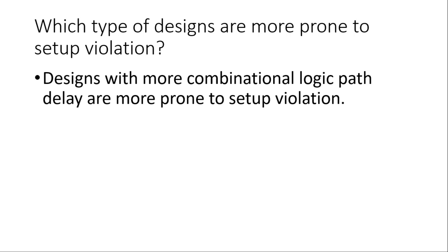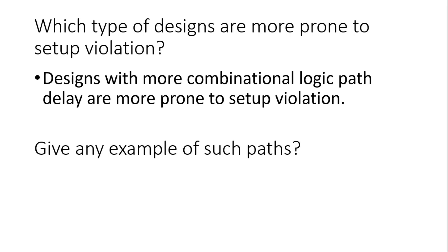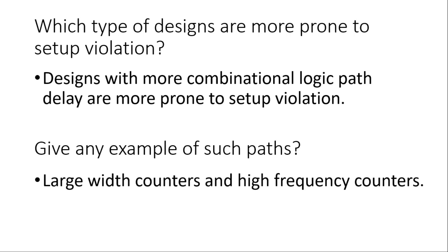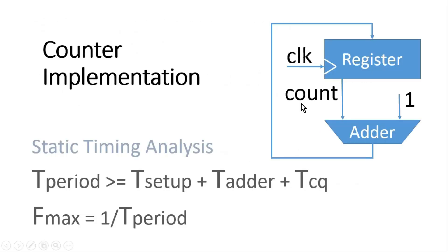The next question asks for an example of paths where chances of setup violations are more. The answer is large-width counters and high-frequency counters. This is a simple implementation of a counter where we use a register and an adder — the output of the adder goes to the input of the register, and the output of the register goes to the input of the adder.